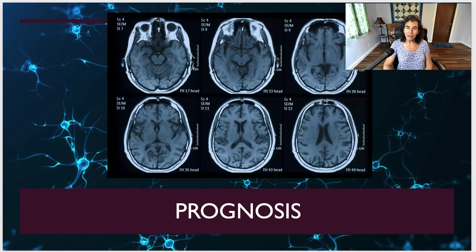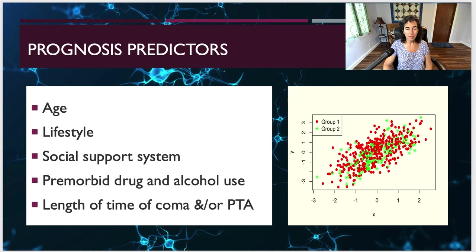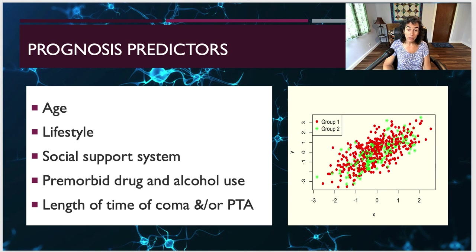Now let's talk about prognosis. Here are some predictors: age, the person's lifestyle, their social support system, how much drug and alcohol use they had prior to the incident, and the length of time they were in a coma or had post-traumatic amnesia.